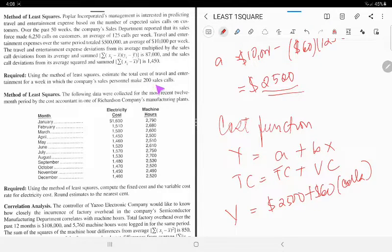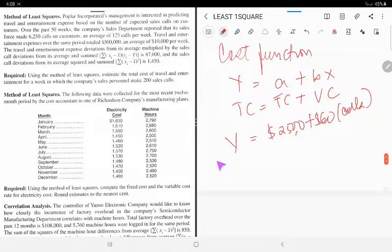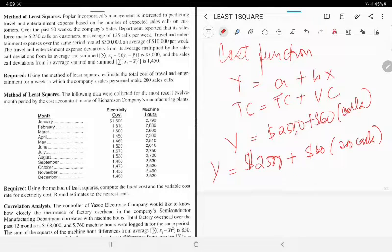We are tasked to determine how much is for 200 calls. So let's determine. Y equals $2,500 plus 60 multiplied by 200 calls. How much is it? We have $14,500. So that's the answer.